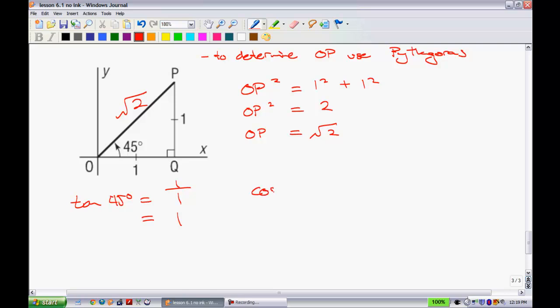Let's deal with cosine next. Cosine of 45 degrees is equal to my adjacent one over my hypotenuse root two. And we'll also see that the sine ratio of 45 degrees is equal to one over root two.